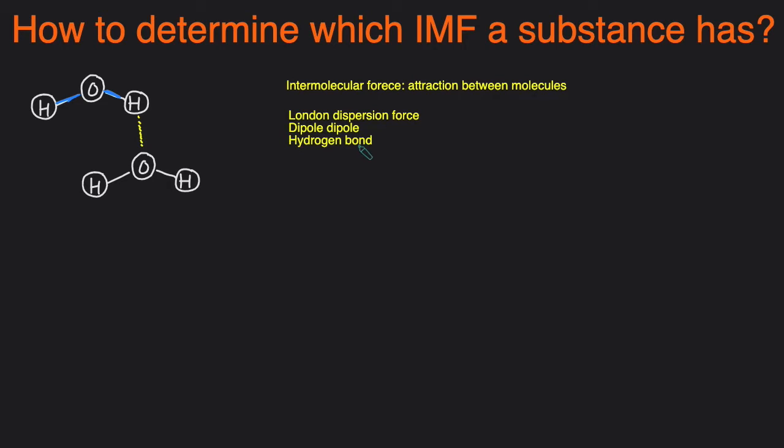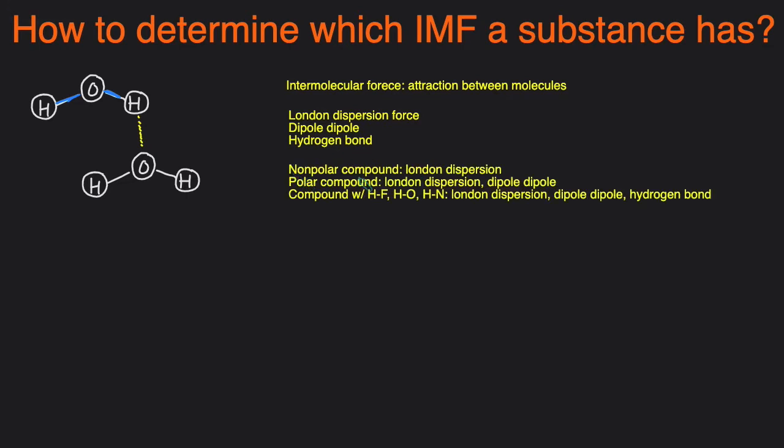So how do you determine which of these forces a compound will have? Well, you can just use this guideline. If a compound is nonpolar, then it will have London dispersion forces only. If a compound is polar, it will have London dispersion and dipole-dipole. And then lastly, if you have a compound with an H that's directly attached to an F, an H directly attached to an O, or H directly attached to an N, then it'll have all three. It'll have London dispersion, dipole-dipole, and hydrogen bonding. So everything, all compounds have London dispersion. If it's polar, it'll also have dipole-dipole. And then if it has HF, HO, or HN, then it'll have dipole-dipole and hydrogen bonding.